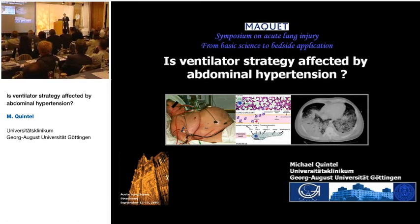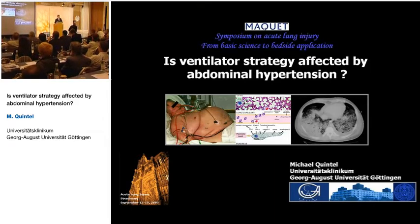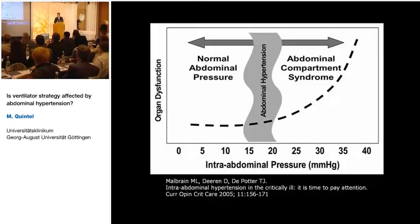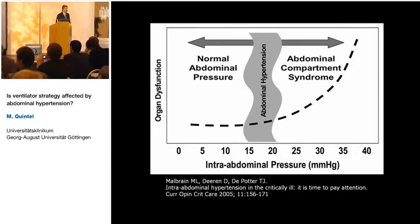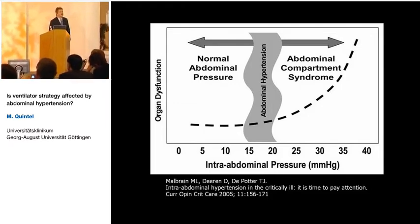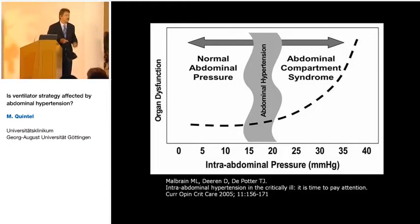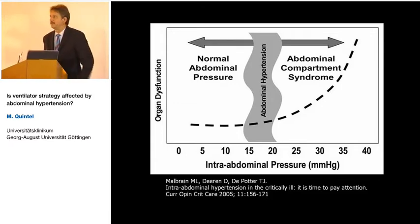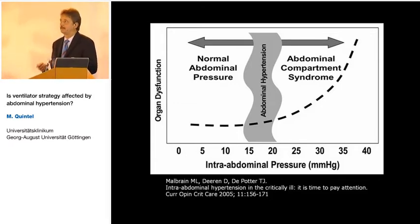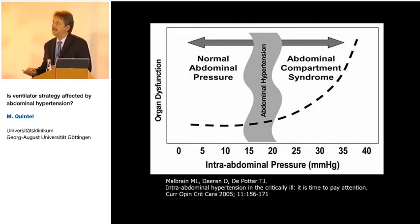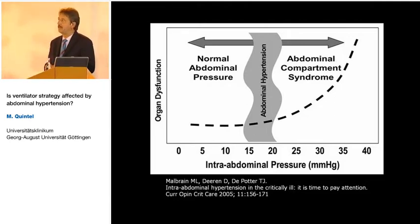We are starting now with talking about intra-abdominal pressure. If we talk about intra-abdominal pressure and its interactions with respiration, we first have to become aware of what intra-abdominal pressure really means. That's work from my friend Manu Malbrain — he said there is a place where we can talk about normal abdominal pressure, and there is a place where we talk about abdominal hypertension and abdominal compartment syndrome.